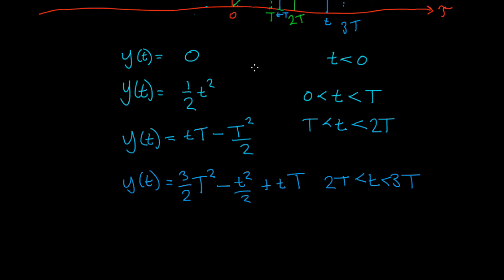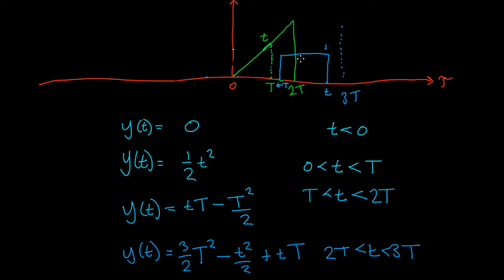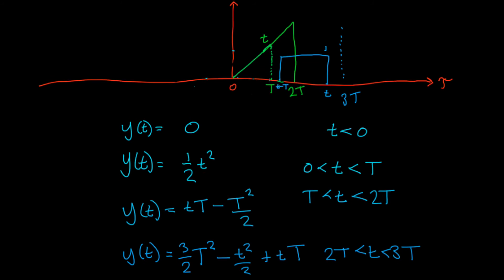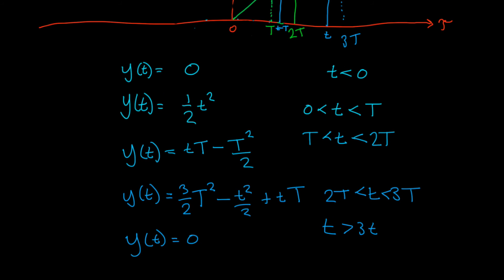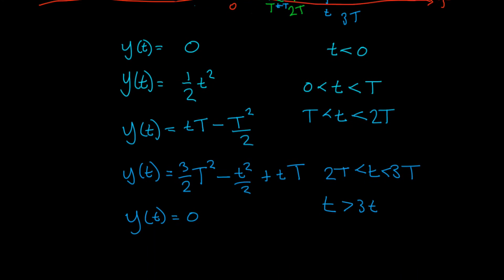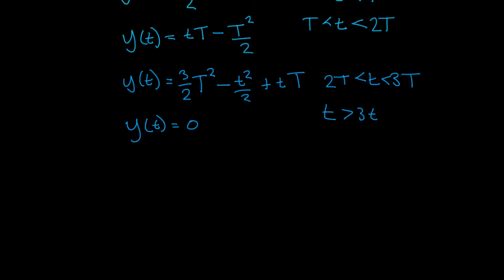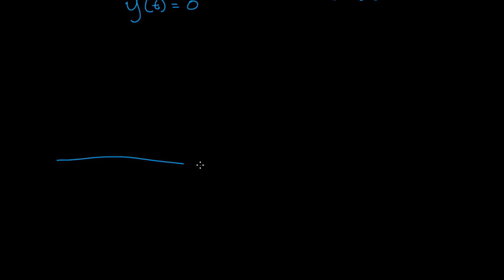So now we've built up a piecewise function: it's 0 when t < 0; it's ½t² between 0 and T; it's tT − T²/2 between T and 2T; and the third function between 2T and 3T. The final case is when t is greater than 3T, where t minus T is greater than 2T — it's easy to see that'll be 0 times 0 — so y(t) equals 0 when t > 3T. And so that's our final piecewise y(t) function. Now the final step is to draw it out on a graph.